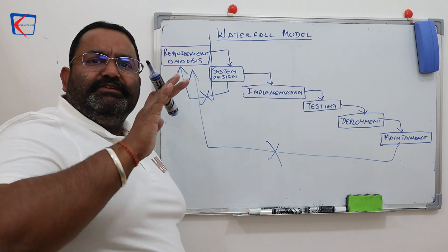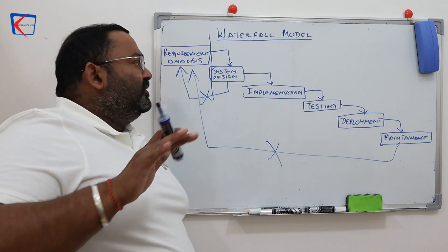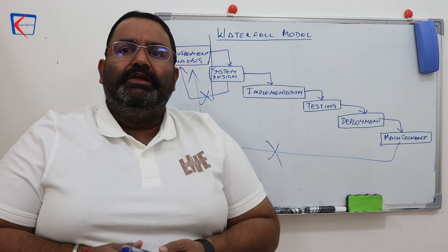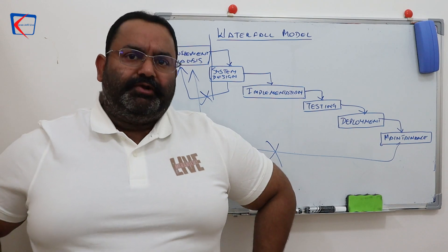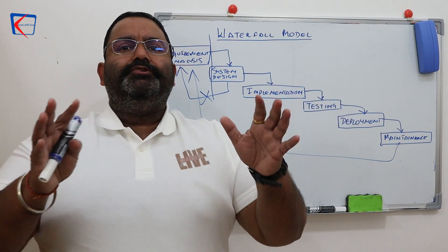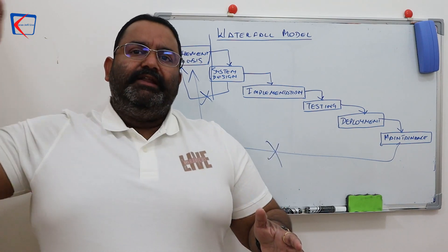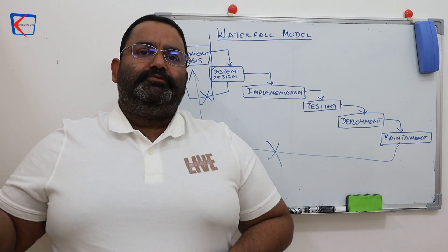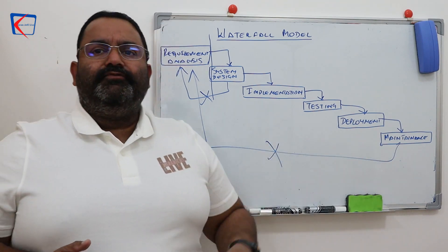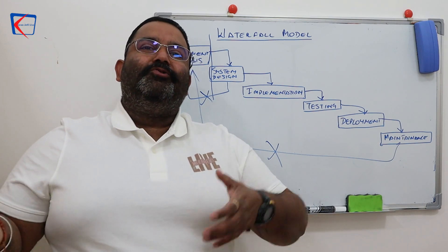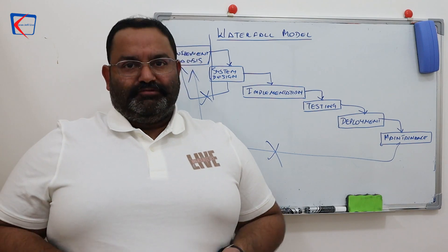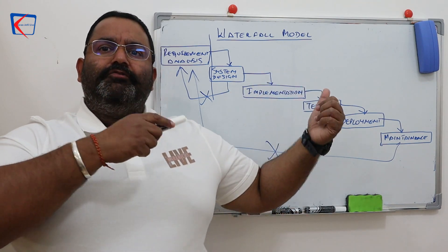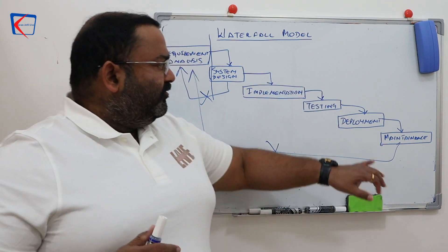In the waterfall model, once one stage is over, the output of that stage is frozen — you cannot make any changes. This model is followed in projects where you are very sure about your requirements, 100% sure, and there are no big changes expected later. The waterfall model was borrowed from traditional engineering projects where in the beginning you are sure about what you want, and once you start you cannot go back.